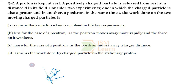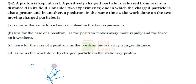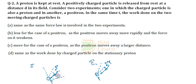They conduct two experiments. In the first case, at distance d in the electric field of the proton, they place another proton. In the second case, at the same distance d in the electric field of the proton, they place a positron. So in both experiments, positively charged particles are placed at distance d from the proton at rest.